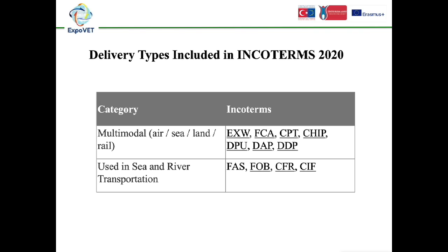While Incoterms 2020 was being organized, the responsibilities and risks of companies were discussed based on the stages of shipment and the parties undertaking transportation risk. Eight Incoterms — EXW, FCA, FAS, FOB, CPT, CFR, CIP — form the first category, where shipment responsibility belongs entirely or partially to the buyer, namely the importer. DAP, DPU, and DDP, where transportation responsibility and risk lies with the seller (the exporter), are the second category.